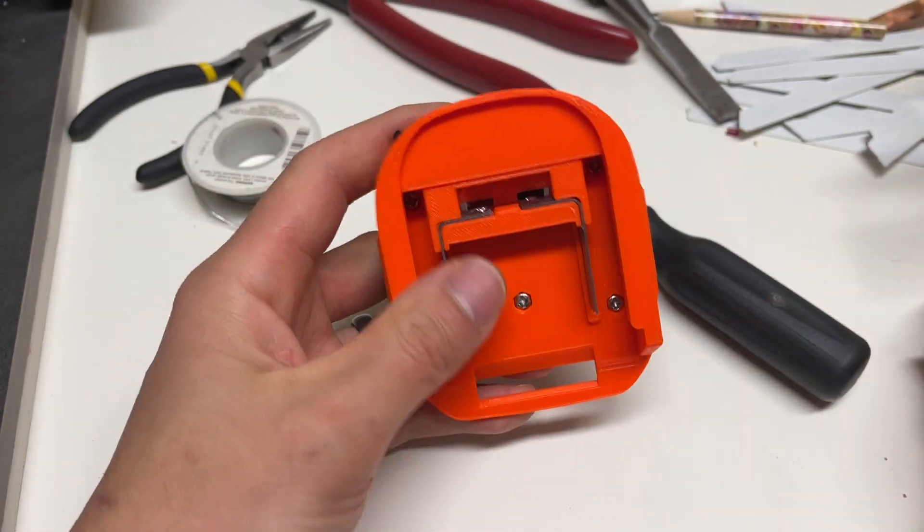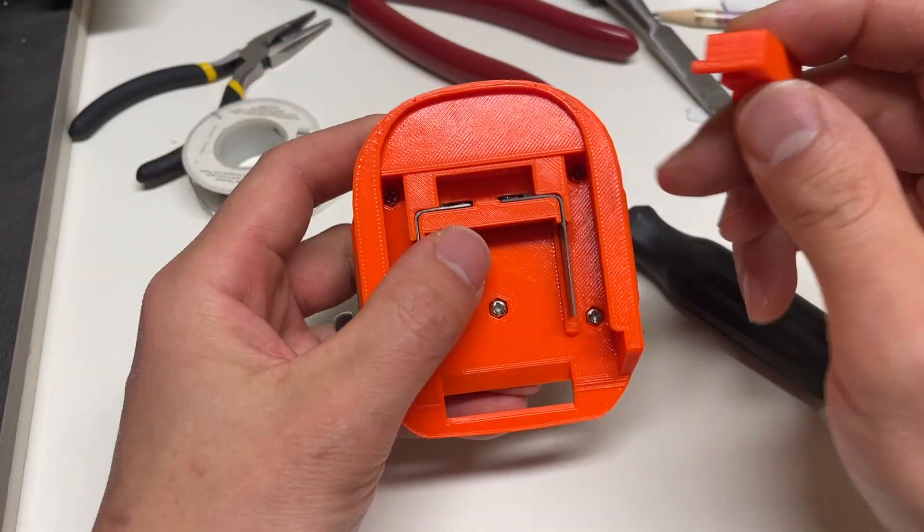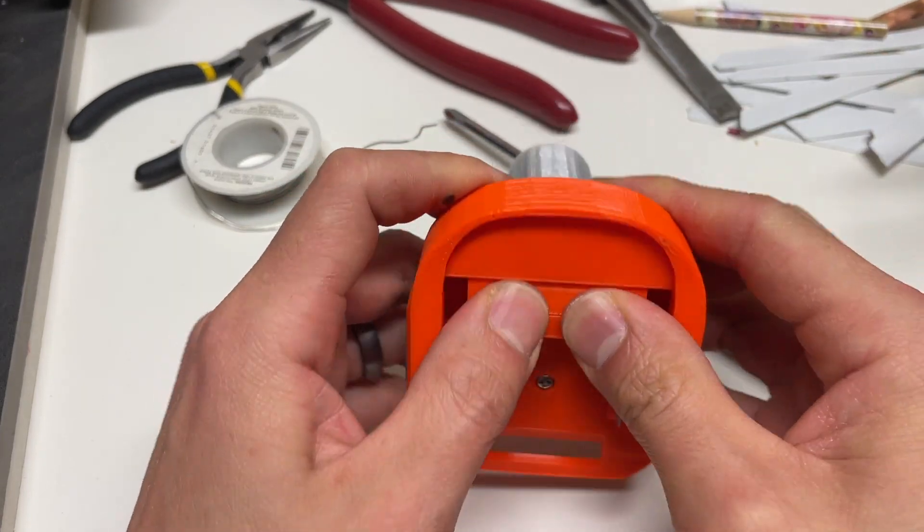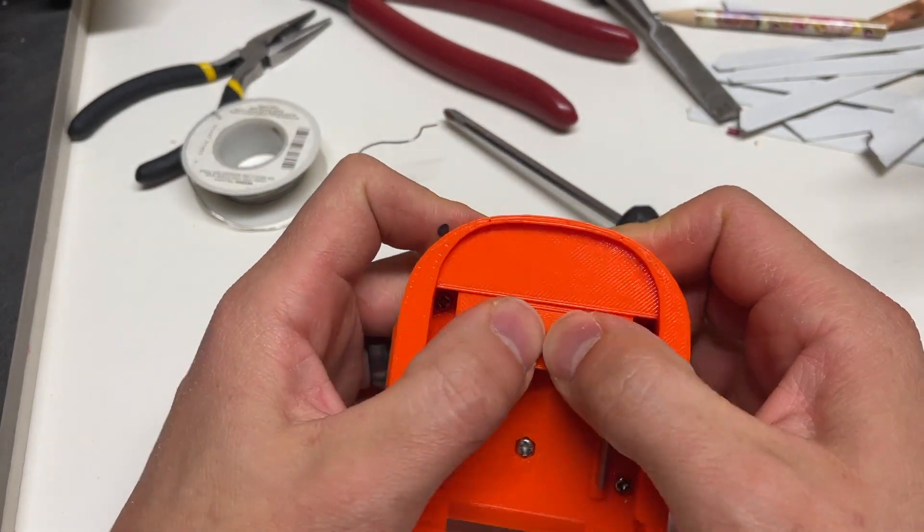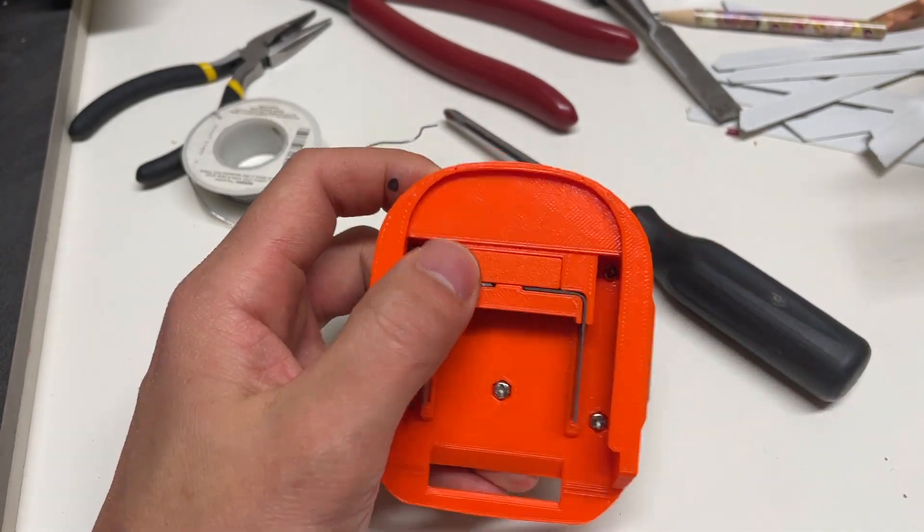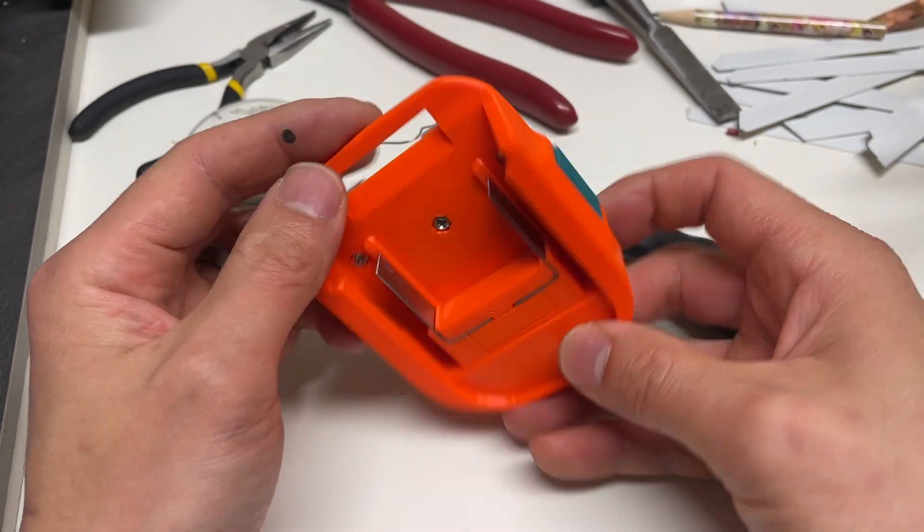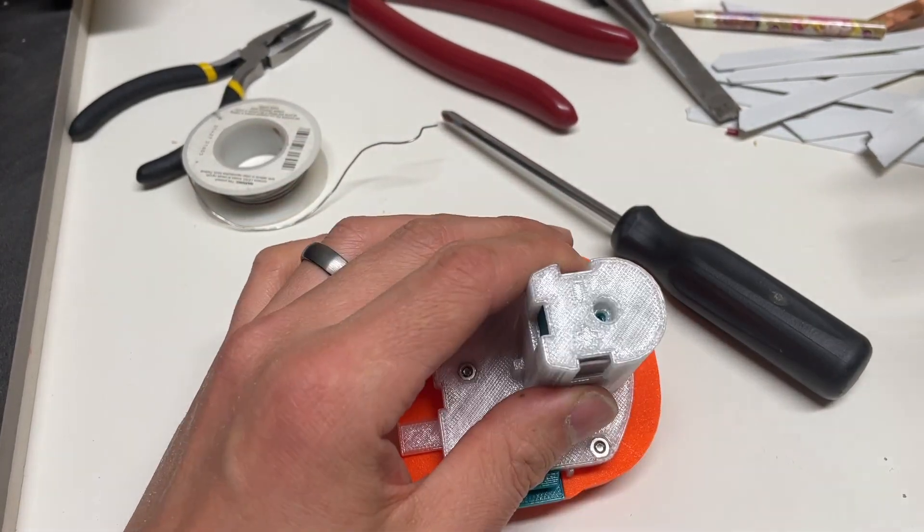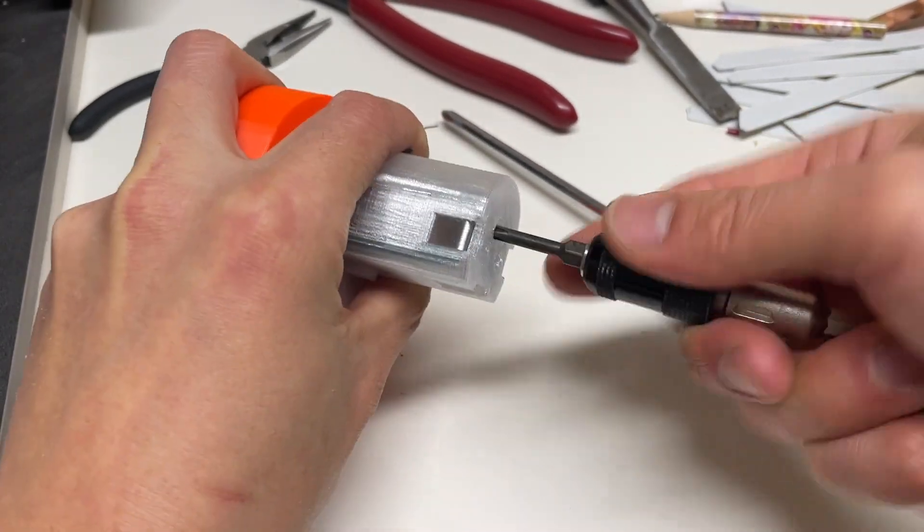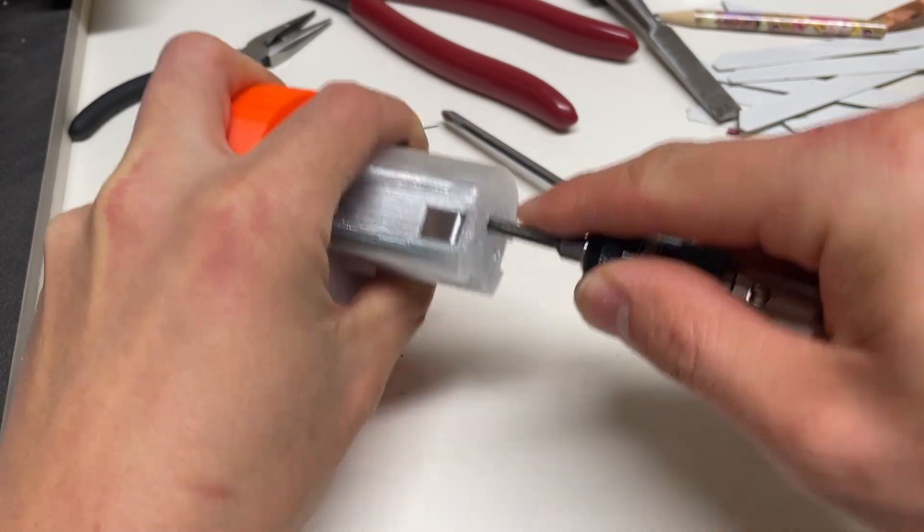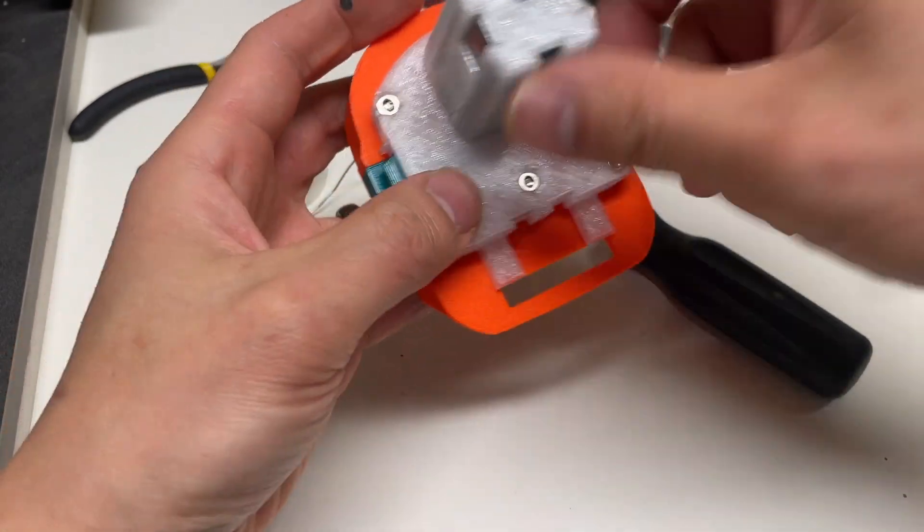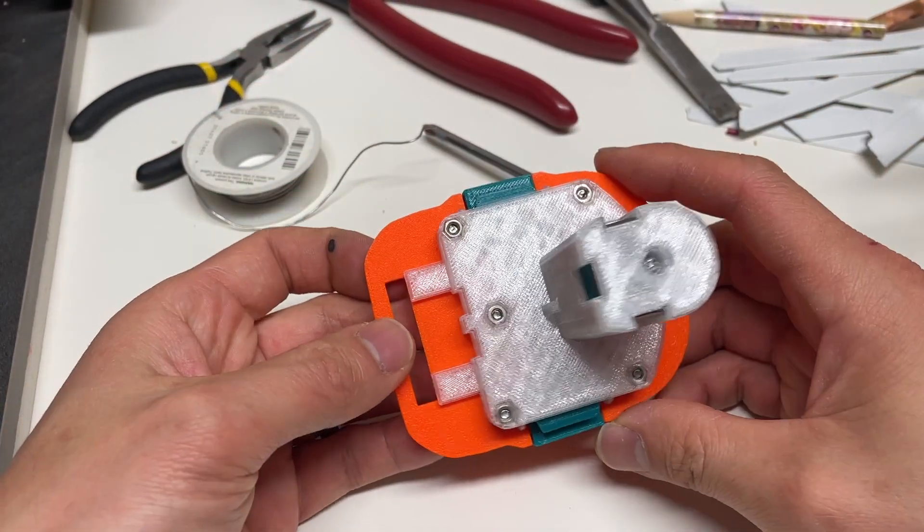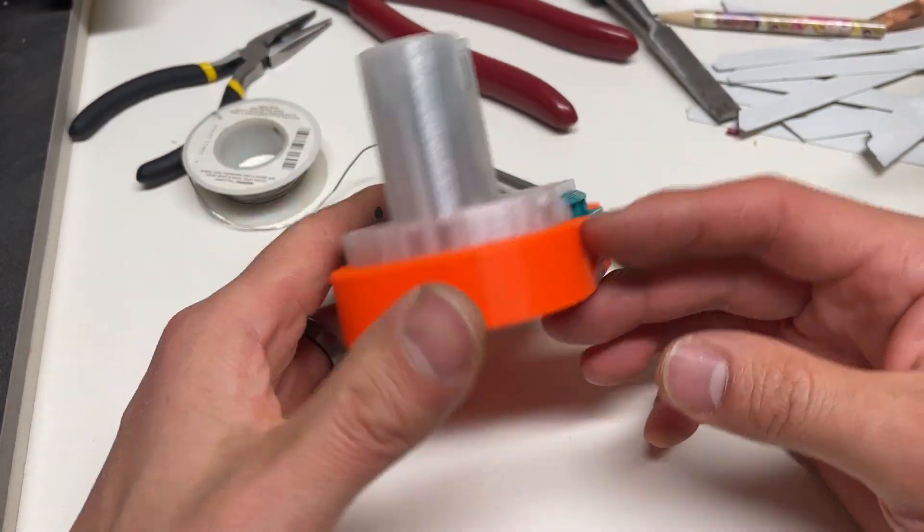So now it's time to cover this up. You could add glue here but I find that this friction fit is good enough. Up here we want to add a screw. Alright so now we're done.